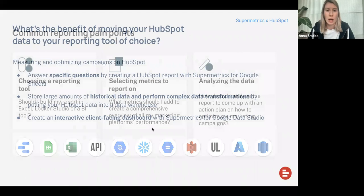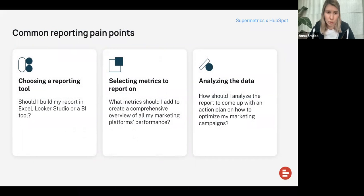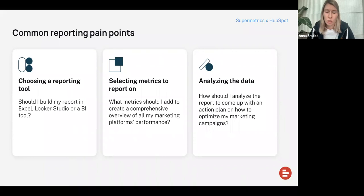Now let's talk about common reporting pain points. For example, some people are struggling with choosing a reporting tool — should I build my report in Excel, Looker Studio, or a BI tool like Power BI? Another very common challenge is that people do not know what kind of metrics they should be reporting on. There are lots of metrics you can export from HubSpot, from monitoring metrics like deal amount won or amount lost to all your contact lifecycle information. So how do I put it all together in one report that's not too overwhelming for my audience?